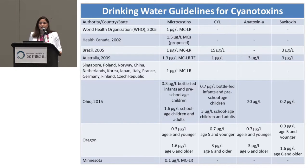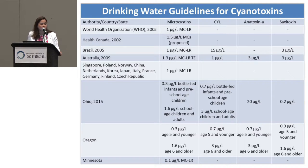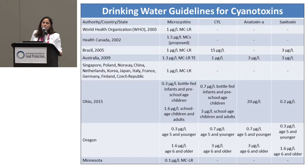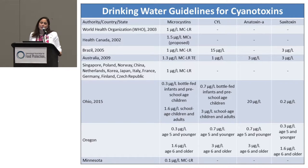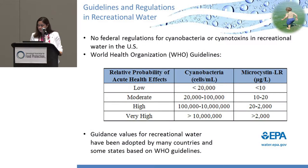The World Health Organization guideline is the one used most often — a provisional value for microcystin-LR, since data for other congeners is insufficient. Health Canada has 1.5, Australia 1.3, and others vary. Ohio and Oregon have adopted our health advisories of 0.3 and 1.6 micrograms per liter for children and 1.6 and 3 for others. Minnesota has the lowest value of 0.1. All these values vary based on how risk assessment is developed, including body weight, daily water intake, uncertainty factors, and the study selected.